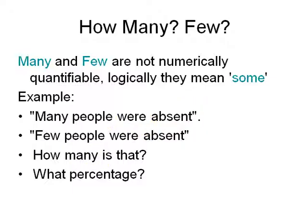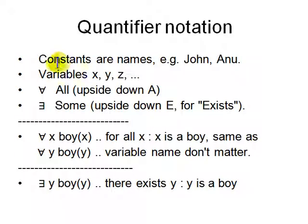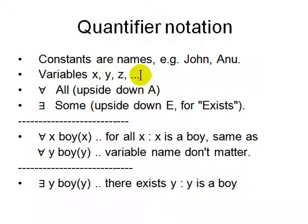So let's look at the notation. First of all, constants already have a name, like John or Anu. If people have names we use names — say 1, 2, 3, those are names. And if you don't have a name, you have a variable: X, Y, Z — we use variables. X is not really an object; it is a pointer to an object. So X can be John, or X could be any person.